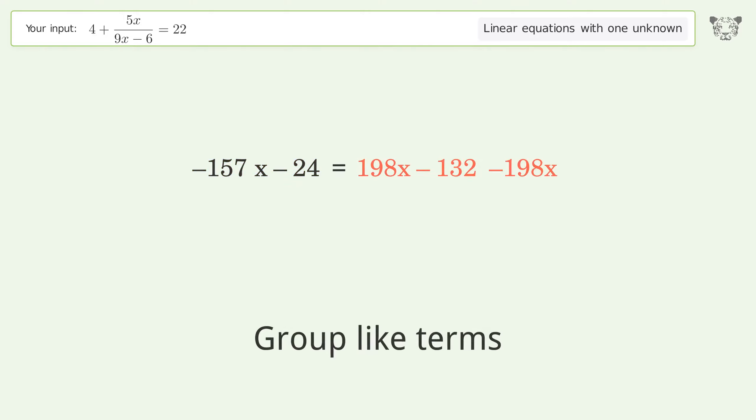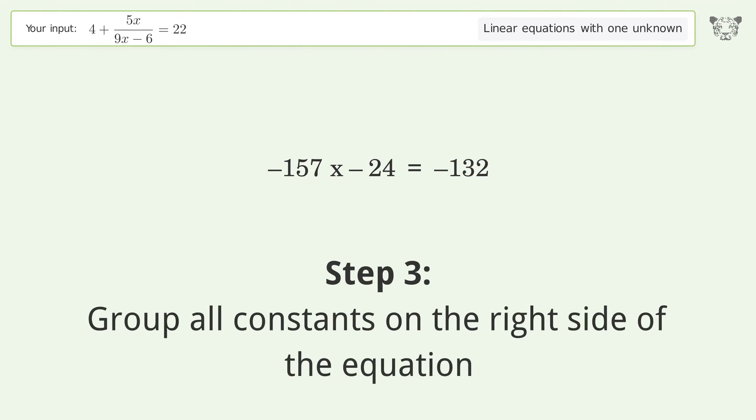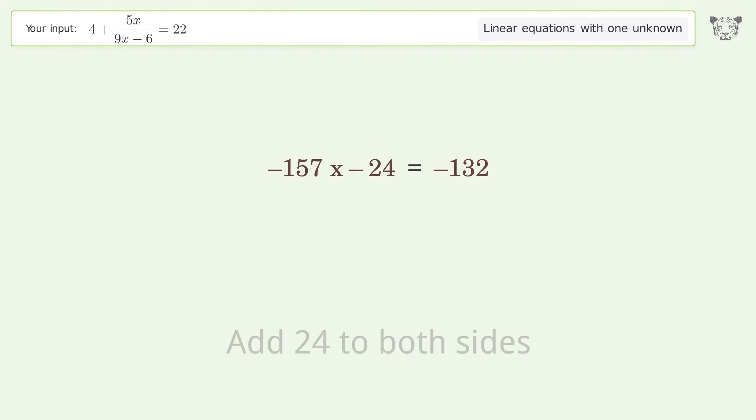Simplify the arithmetic and group like terms. Group like terms on the right side of the equation. Add 24 to both sides. Simplify the arithmetic.